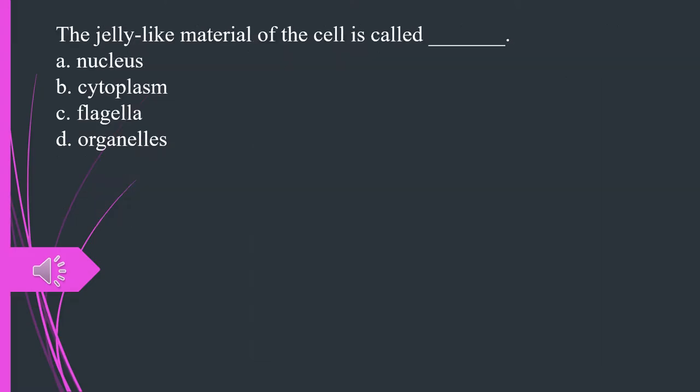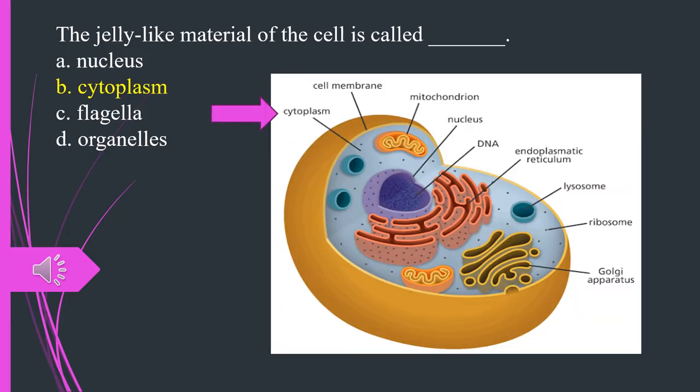The jelly-like material of the cell is called what? A. Nucleus. B. Cytoplasm. C. Flagella. D. Organelles. The answer is B. Cytoplasm.